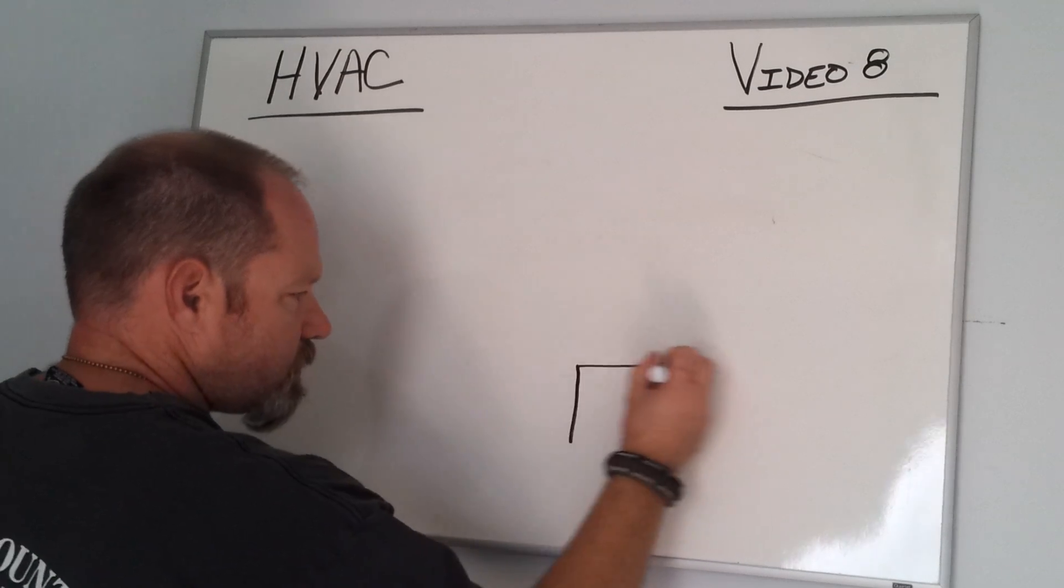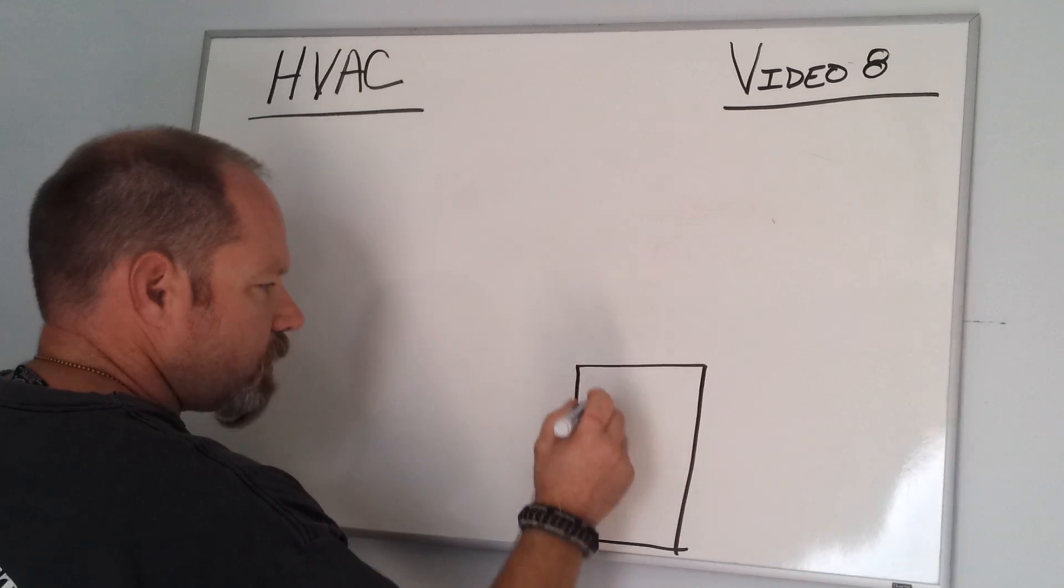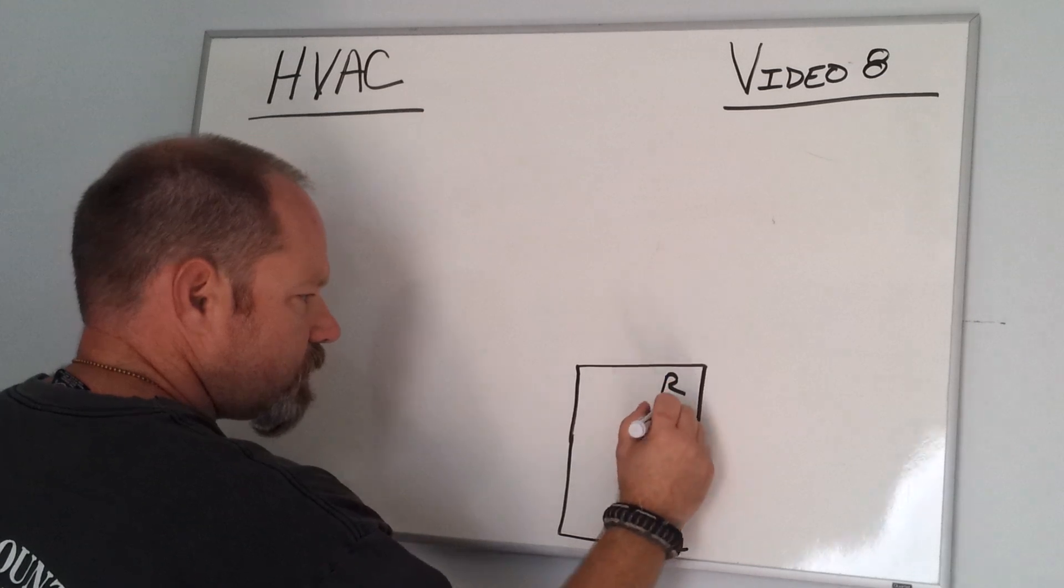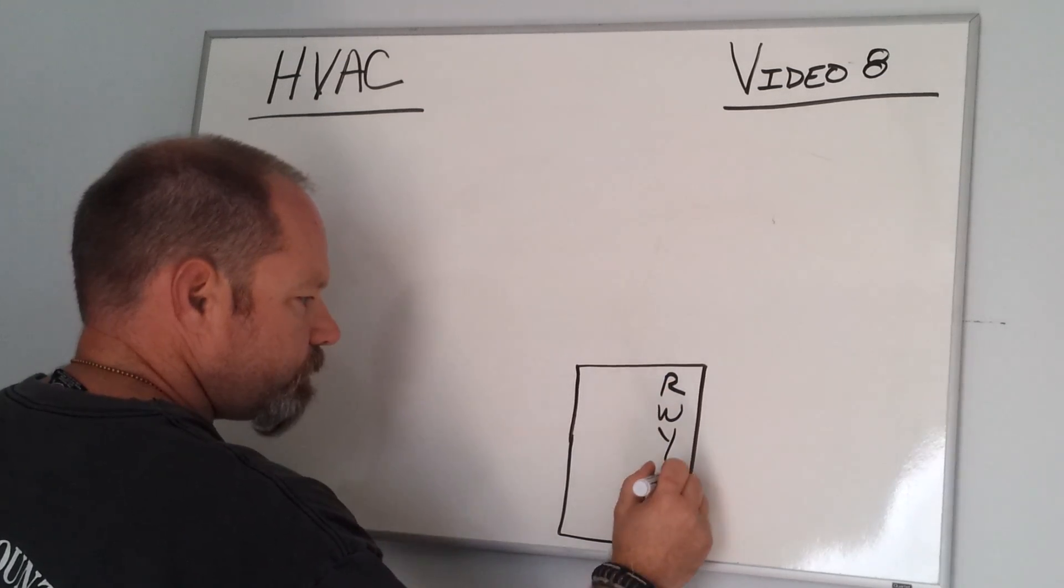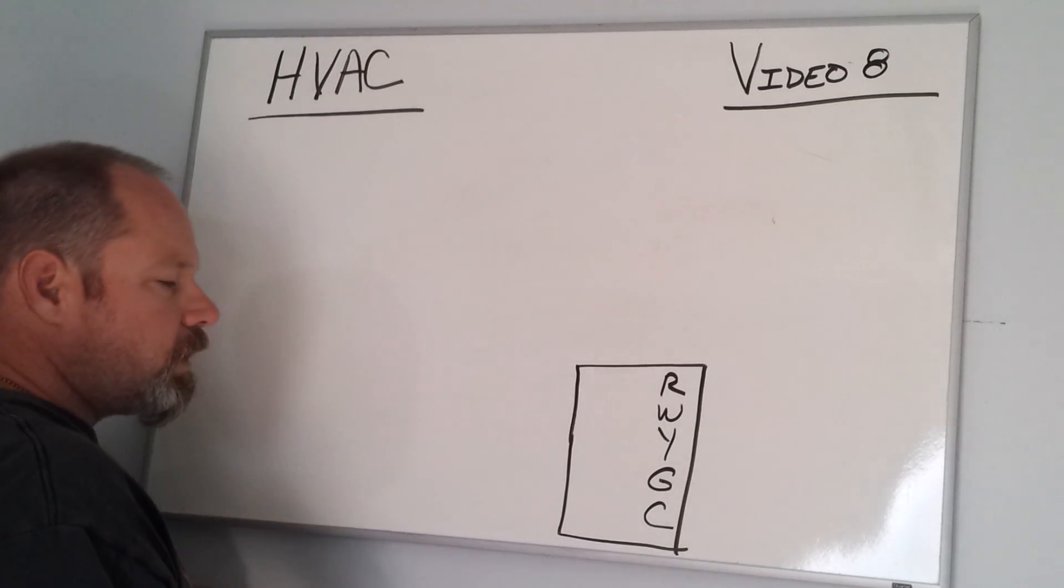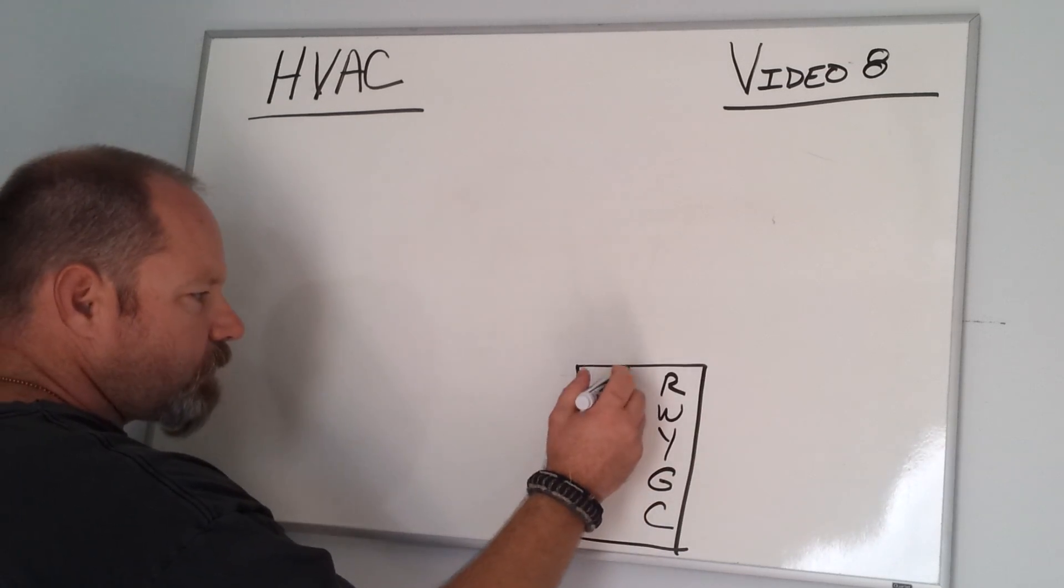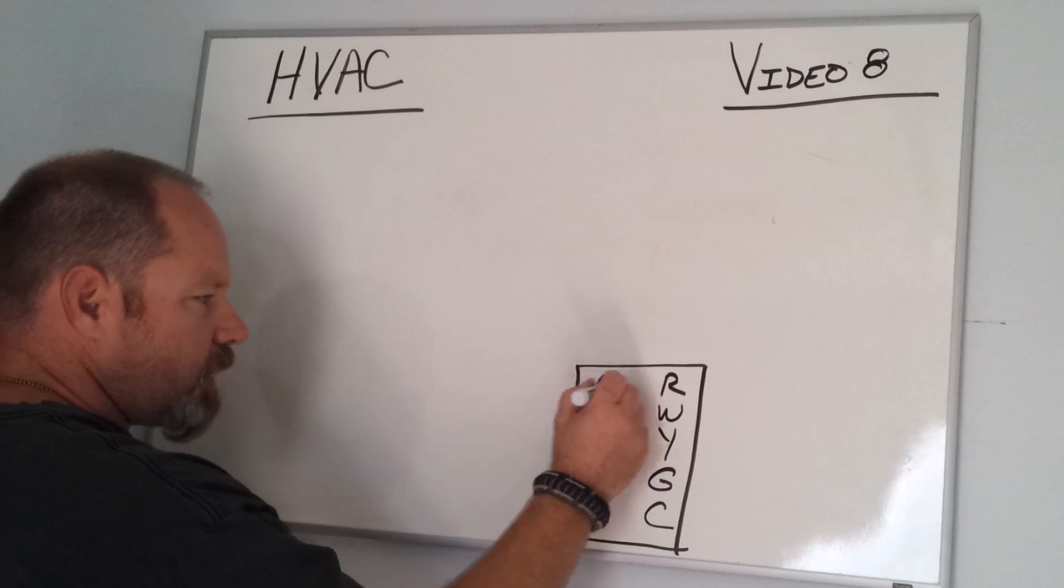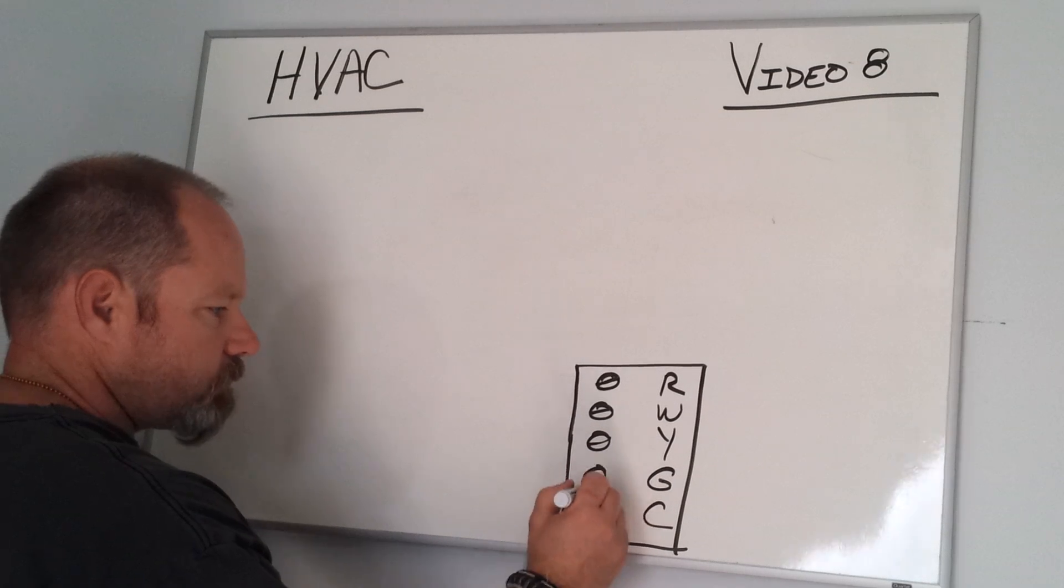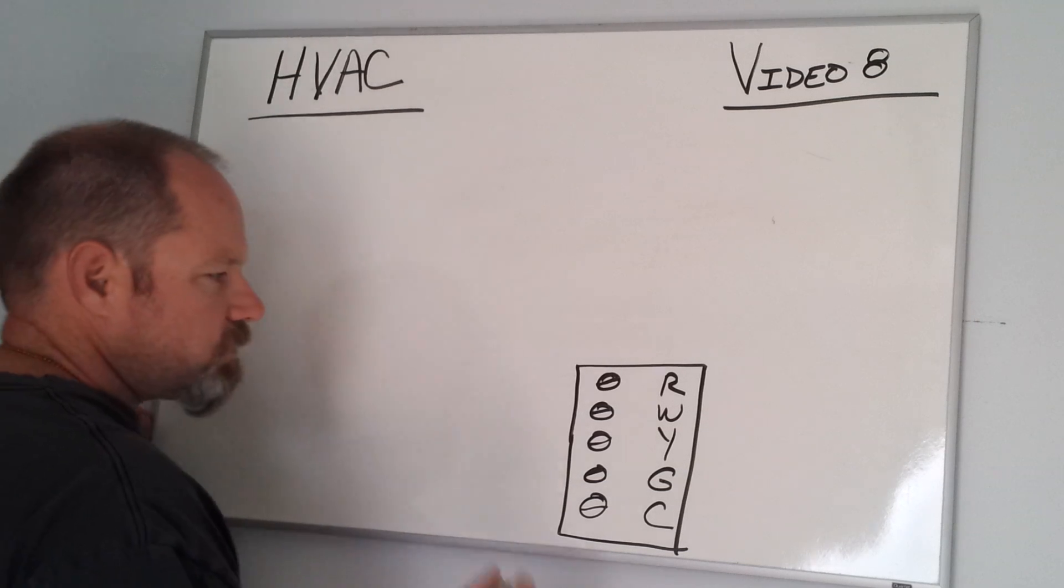Downstairs at your unit, whether in the attic or wherever it may be, there's going to be a terminal block. You're going to have R, W, Y, G, and C. When you see this terminal block, more than likely there's going to be some type of screw to attach a wire to on each one of these. What I'm showing you here is a single-stage heating cooling system.